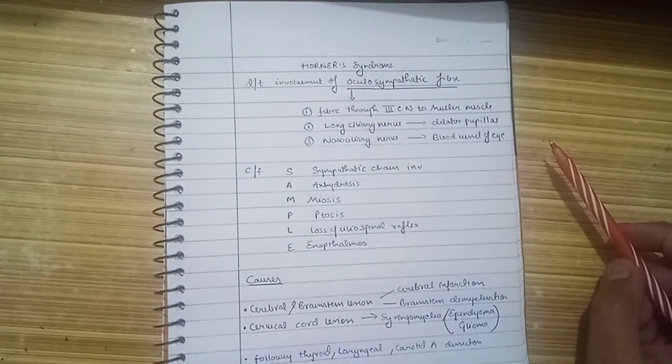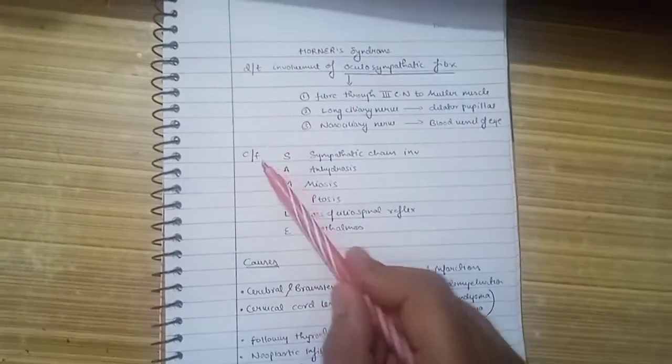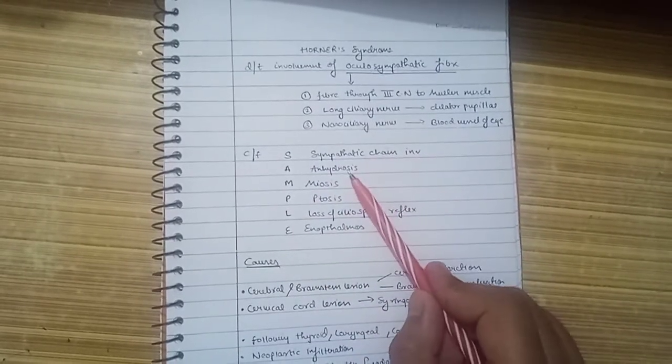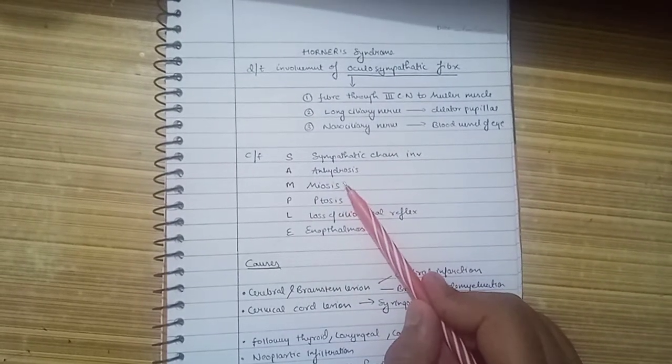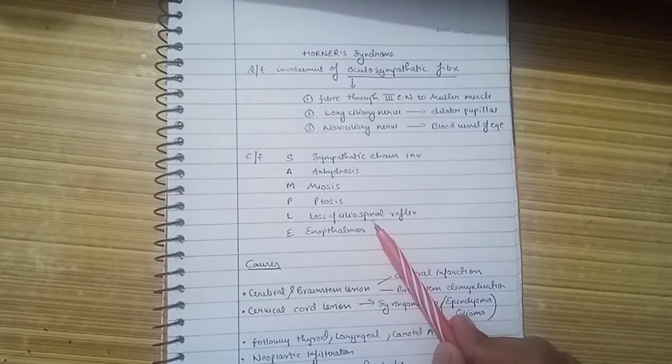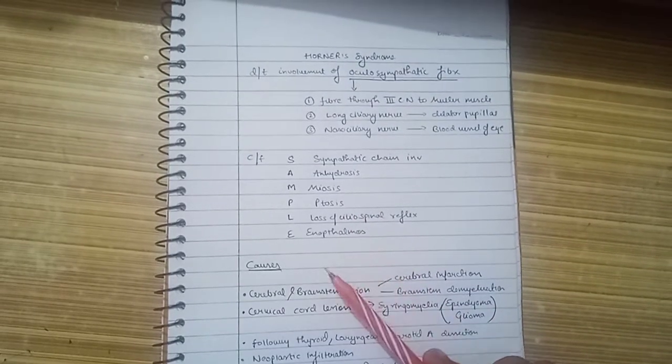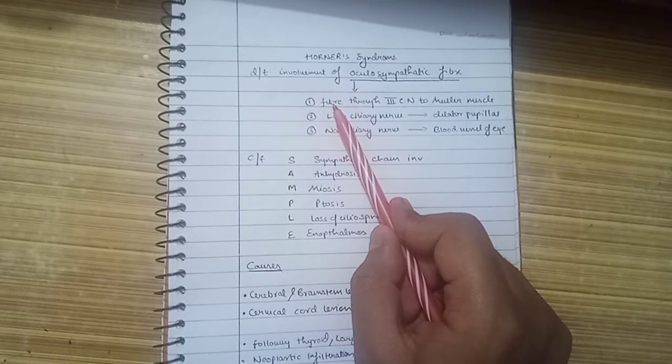Through the nasociliary nerve that supplies the blood vessels of the eye. The characteristic clinical features can be remembered by a mnemonic SAMPLE: Sympathetic chain involvement, Anhidrosis, Miosis, Ptosis, Loss of ciliospinal reflex, and Enophthalmos.